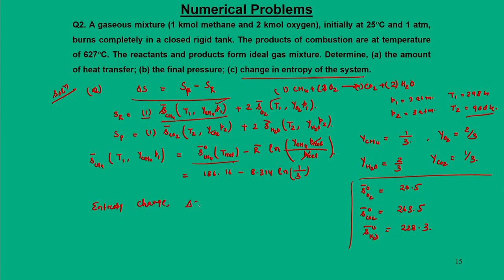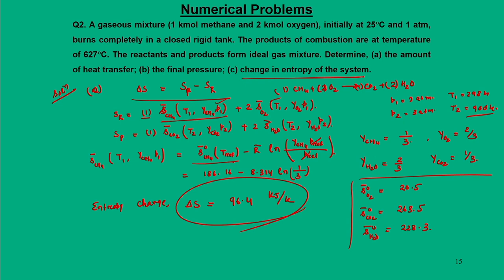In previous lectures, we calculated the change in enthalpy for reacting systems. In this lecture, through these problems, we demonstrated how to calculate the change in entropy in a reacting system. We also calculated the maximum possible temperature during a chemical reaction — the adiabatic flame temperature — both at constant pressure and constant volume. With this, I conclude this lecture. Thank you for your attention.